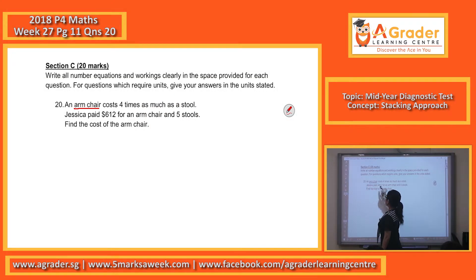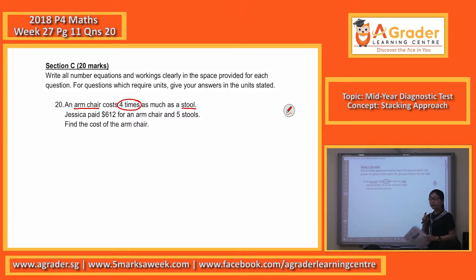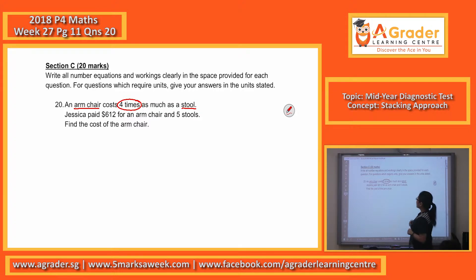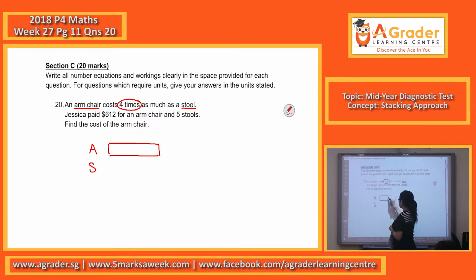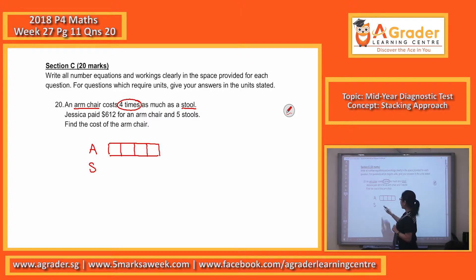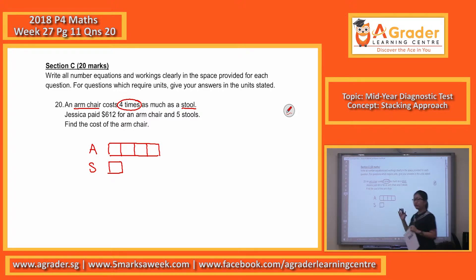An armchair costs four times as much as a stool. Comparing one armchair with one stool, the armchair is four times as much. So four times means four units. The armchair will have four units. How about the stool? One unit. So based on the first line, we have four units for the armchair and one unit for the stool.